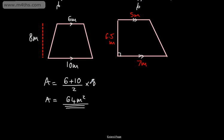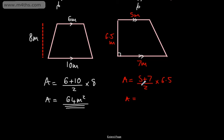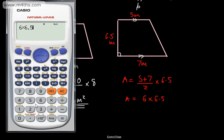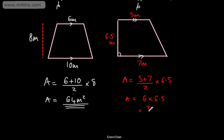The other way you could do it is 8 over 2, which is 4, so it's 4 times 16. For the second trapezium, the area is the top plus the bottom — 5 plus 7 — divided by 2, multiplied by the perpendicular height of 6.5. So 5 plus 7 is 12, divided by 2 is 6, times 6.5 gives us 39 metres squared. If you have an odd and an even number and come up with a .5, that's fine.